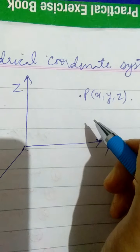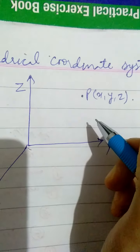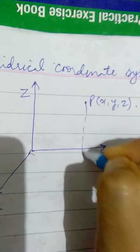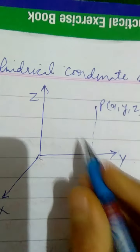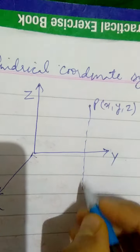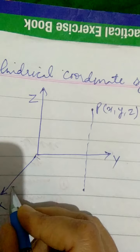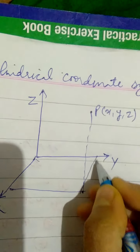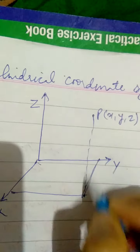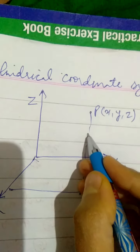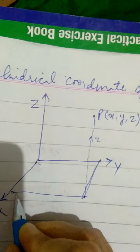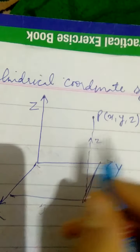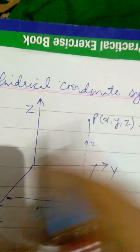Now if you recall what we did in case of a Cartesian coordinate system, from this point P, we draw a perpendicular of any suitable length in the x-y plane. And from this point, we draw two lines which are parallel to the x and y-axis. Then this vertical denotes the z parameter, this denotes the y, and this denotes the x-coordinate of this point P.